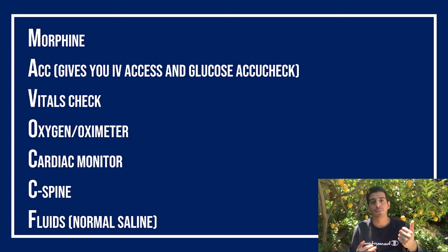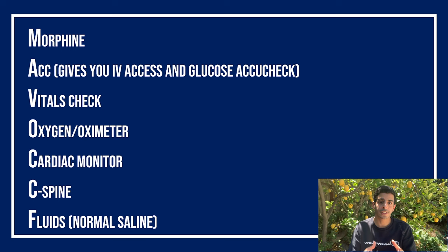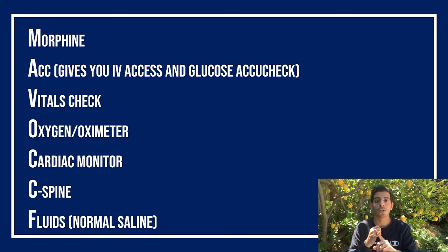It depends case to case — with practice you learn where the patient needs to be. For emergency orders, I remember them with the mnemonic MAVOC plus F: M is for morphine or metoclopramide depending on pain or nausea; A is ACC, giving me IV access and accu-check glucose to check for hypoglycemia; V is vitals check; O is oximeter or oxygen; C is cardiac monitor; the second C is C-spine; and F is for fluids — I usually give normal saline. Remember, these are not all needed — it's just a mnemonic to remind you.